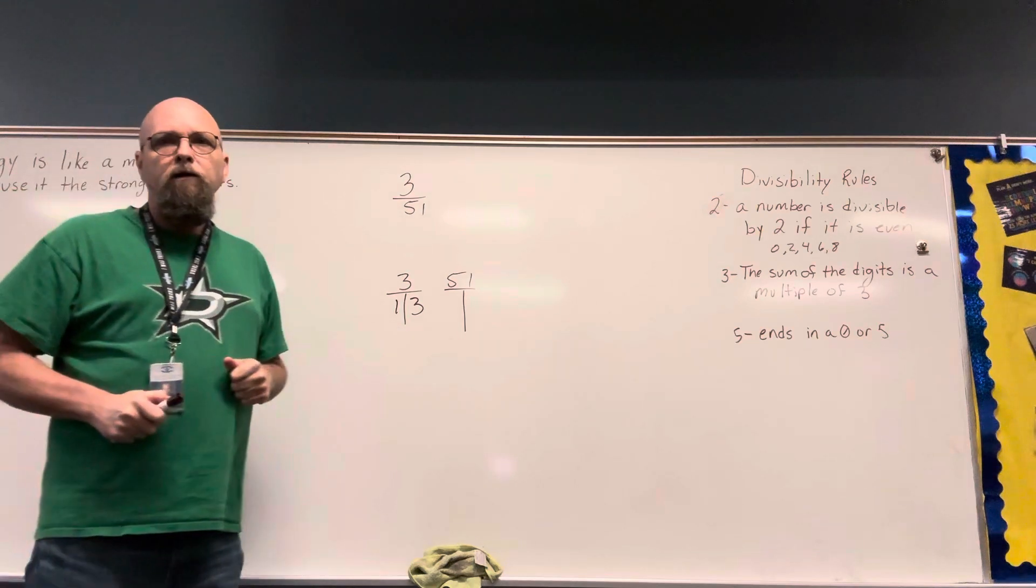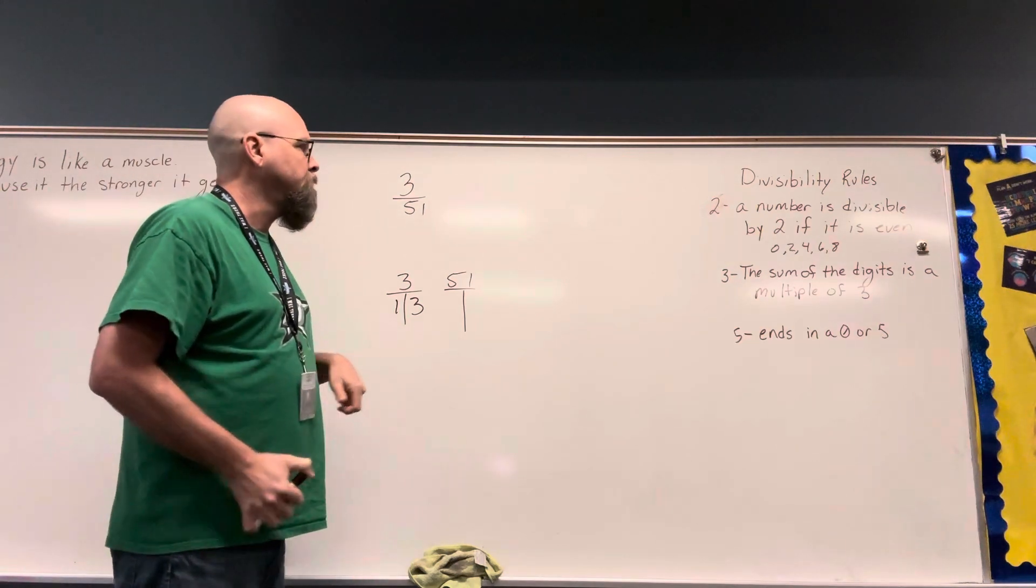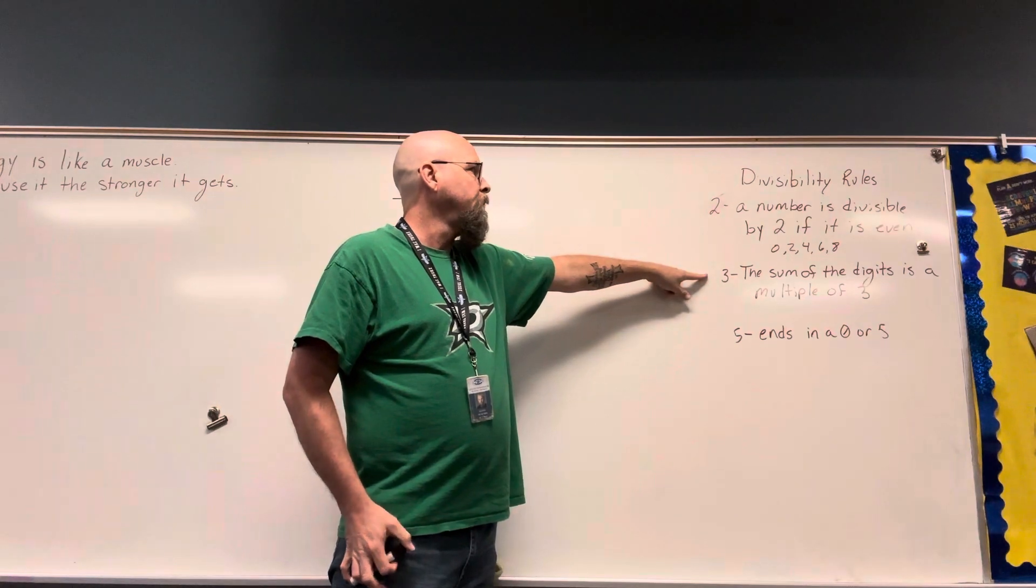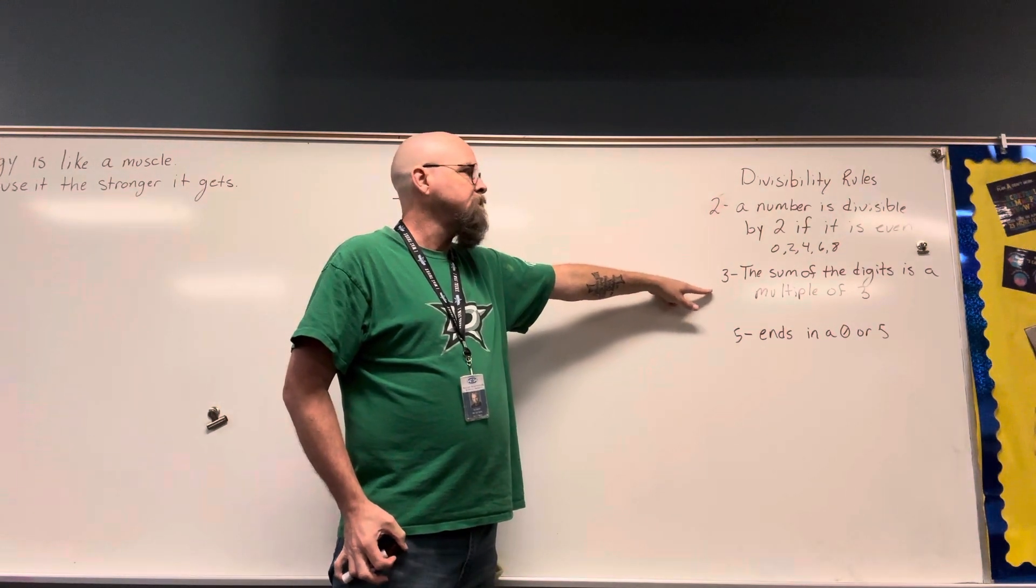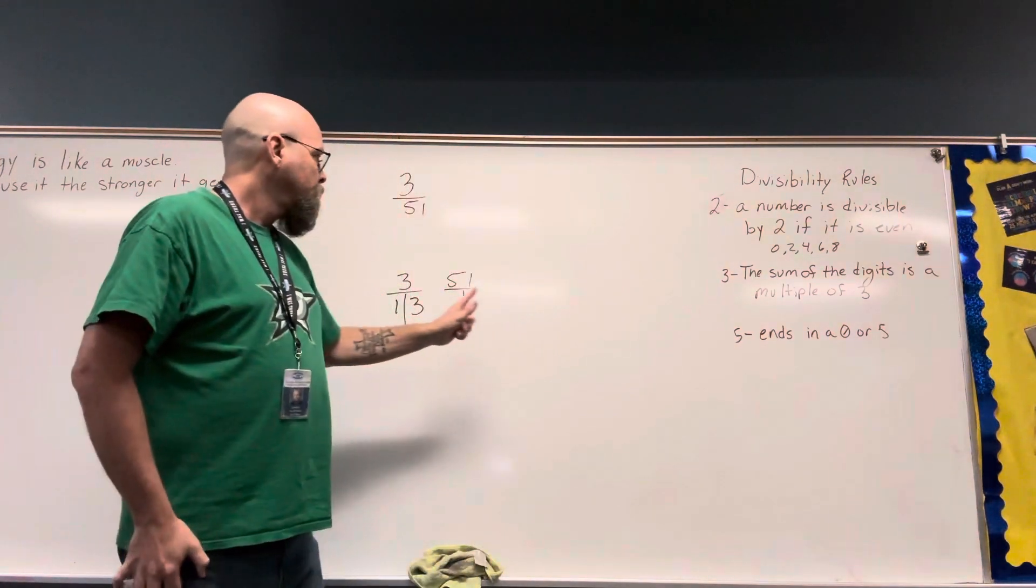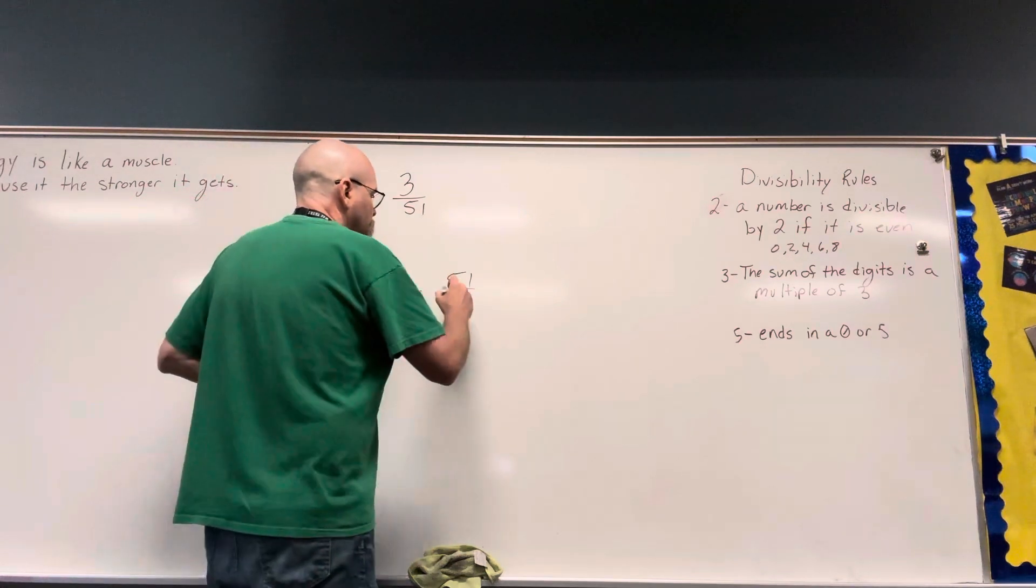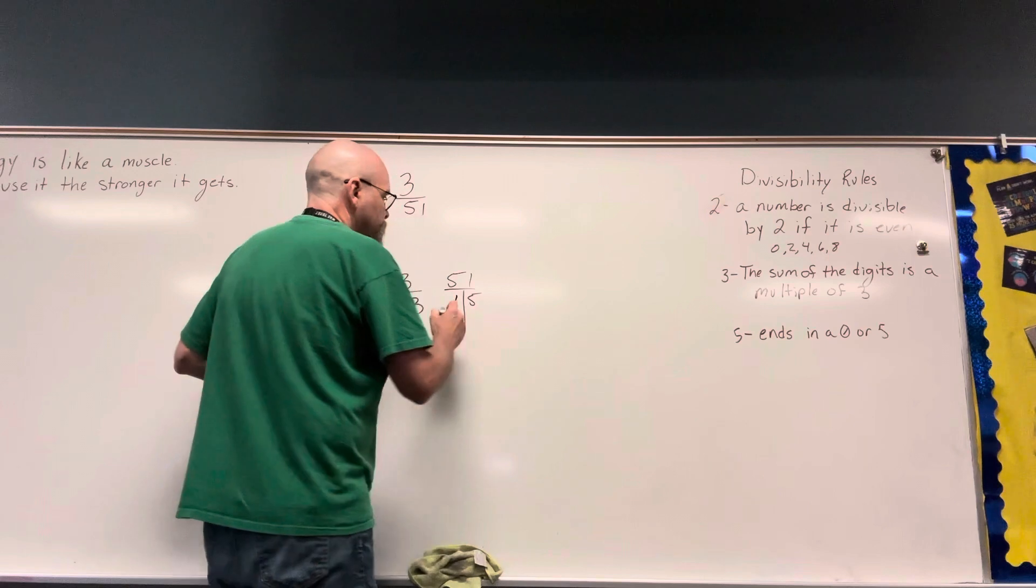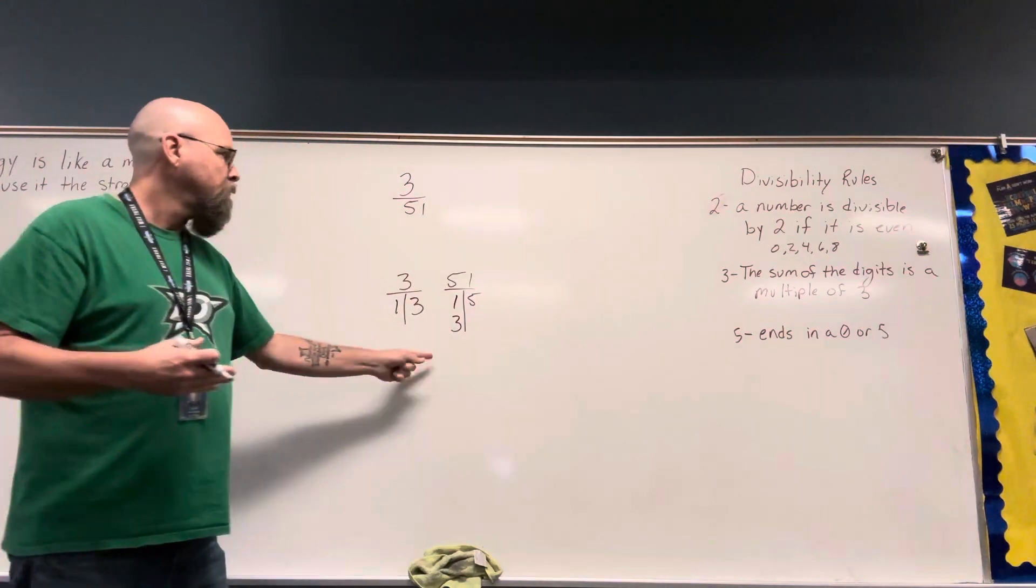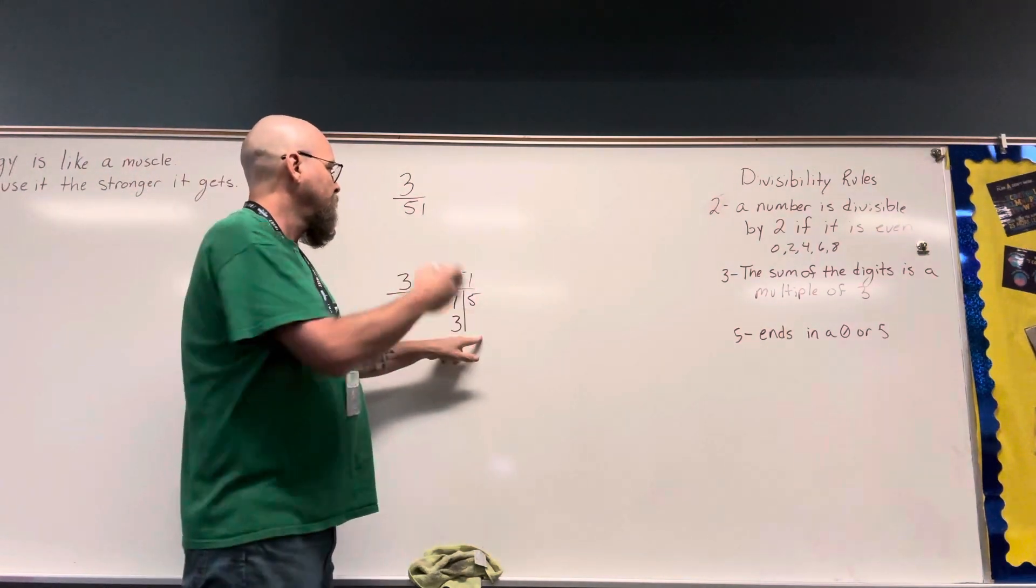Now 51 is one that confuses people often. If I use my divisibility rules for 3, the sum of the digits is a multiple of 3. Well, the sum of the digits in 51 is 5 plus 1, so that means 3 times something equals 51.